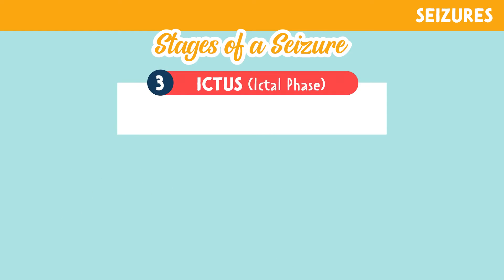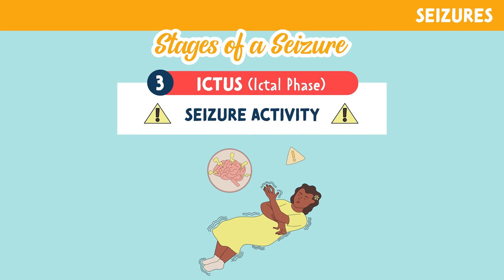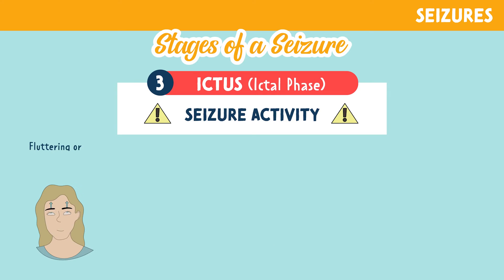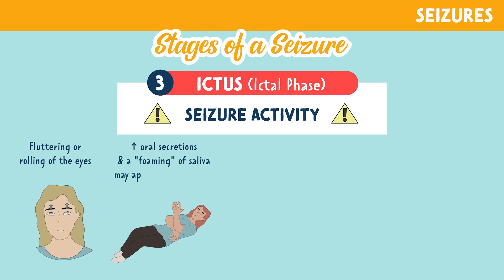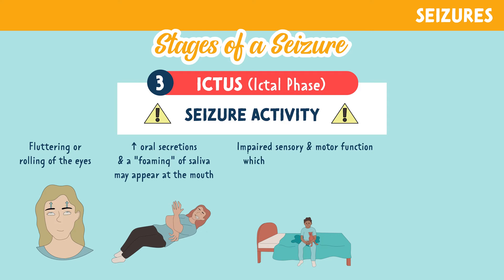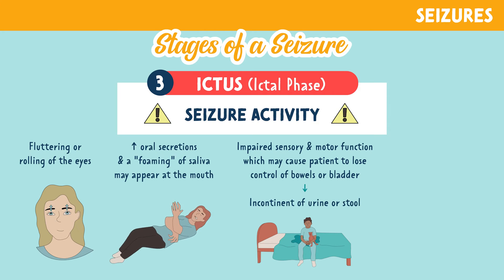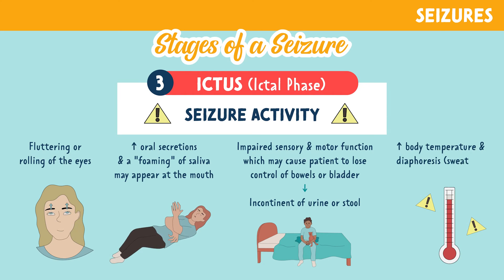The next stage is ictus, which can also be known as the ictal phase. This is where seizure activity begins. When a patient experiences a seizure, they may exhibit fluttering or rolling of the eyes, increased oral secretions, and a foaming of saliva may appear at the mouth, impaired sensory and motor function, which may cause the patient to lose control of bowels or bladder, leading to incontinence of urine or stool. They also may have an increased body temperature and diaphoresis, or sweating.